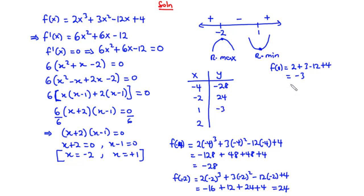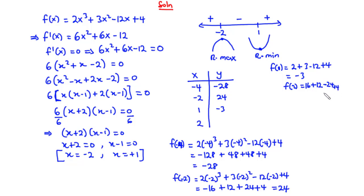For f(2): 2³ = 8, so 2 times 8 is 16. 2² = 4, so 3 times 4 is 12. -12 times 2 is -24, plus 4. So 16 plus 12 is 28, minus 24 is 4, plus 4 is 8. So f(2) = 8.